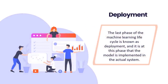Deployment: the last phase of the machine learning life cycle is known as deployment, and it is at this phase that the model is implemented in the actual system. If the previously produced model is able to produce an accurate result that satisfies our requirements at an acceptable speed, then we will implement the model in the actual system. Before launching, we will investigate whether or not it is increasing its performance by making better use of the data that is now accessible. It's almost like writing the final report for a project when you get to the deployment phase.